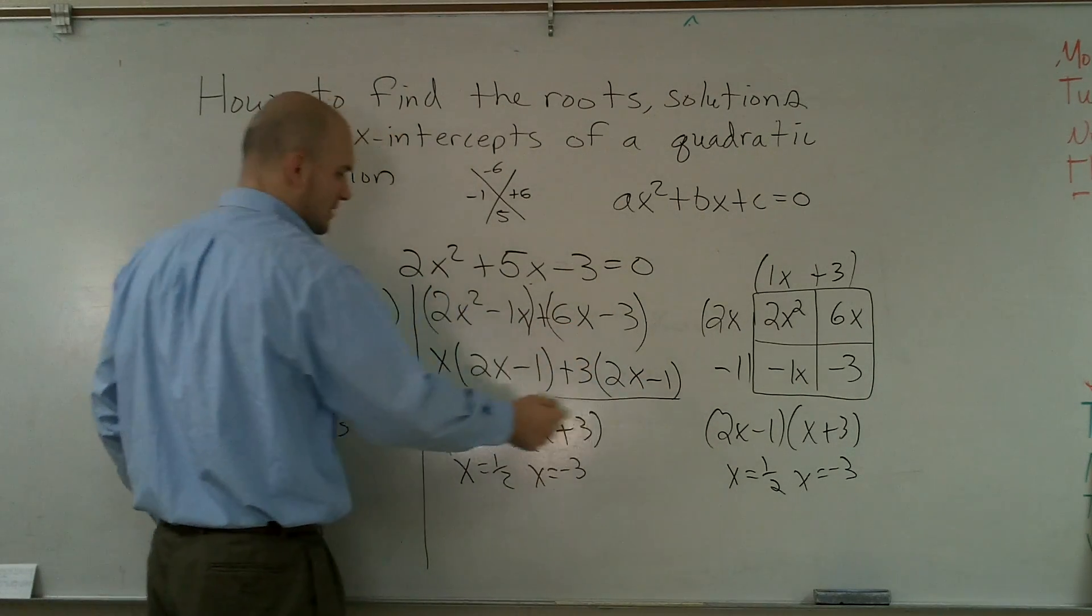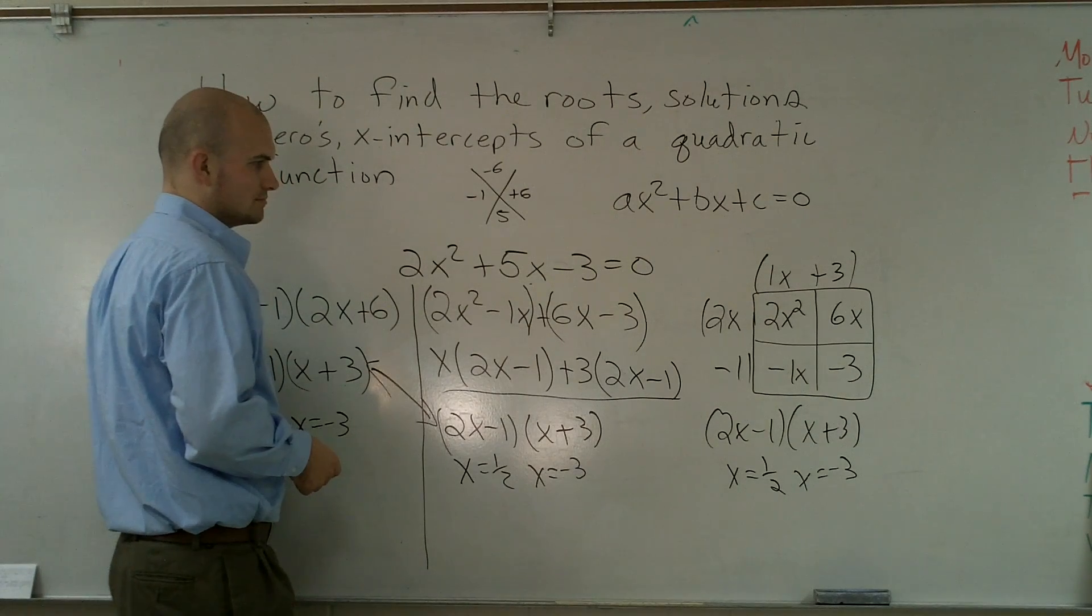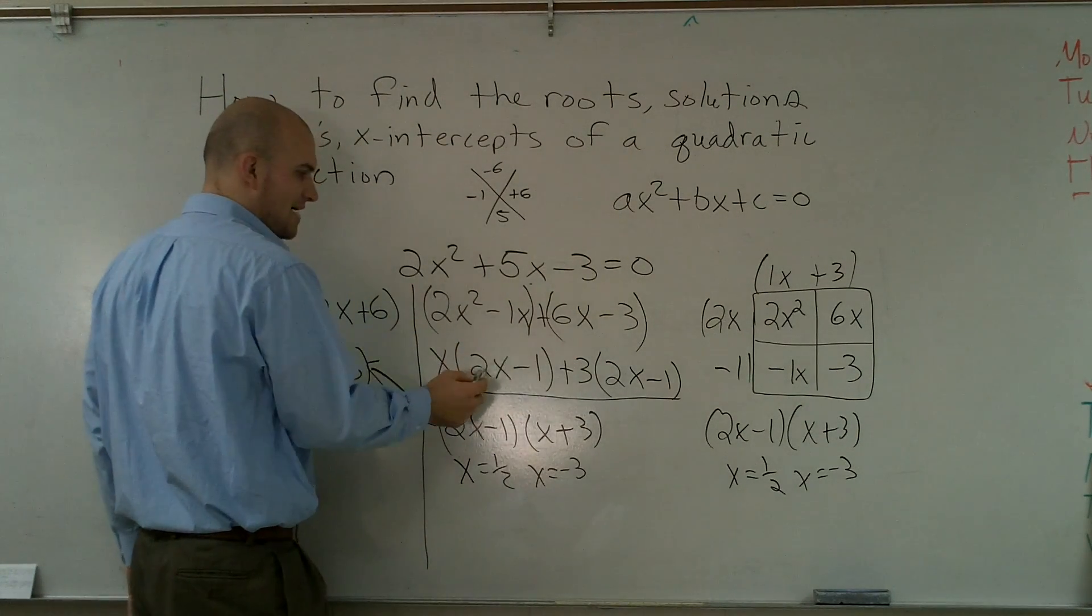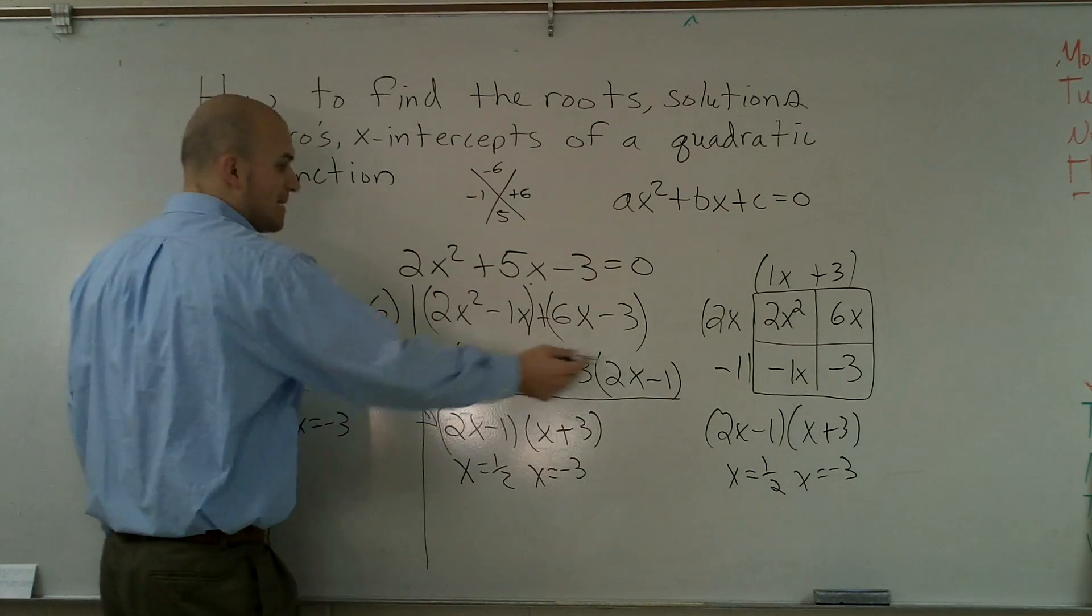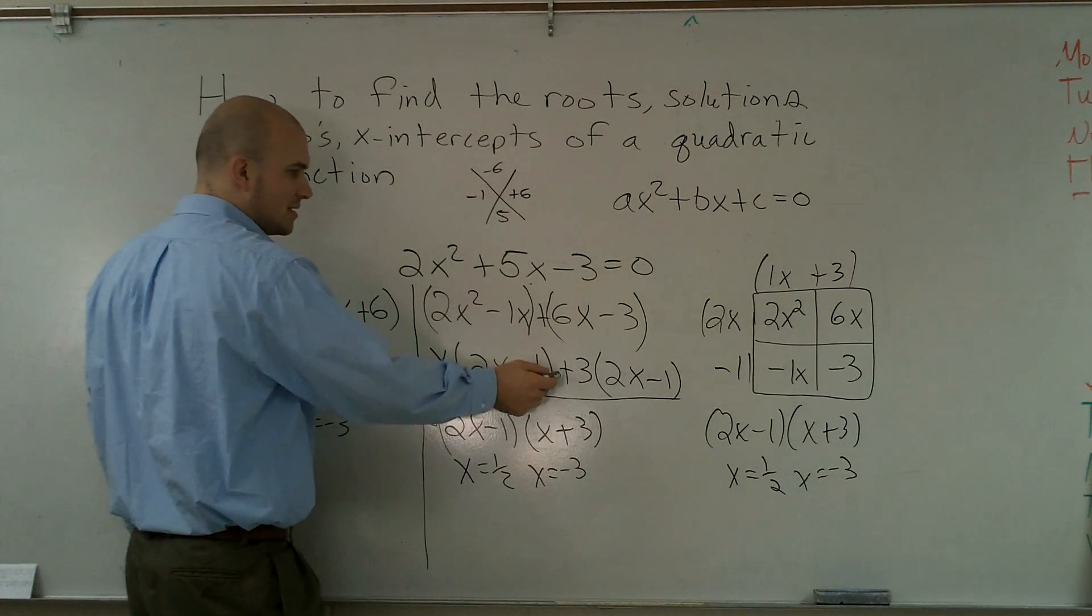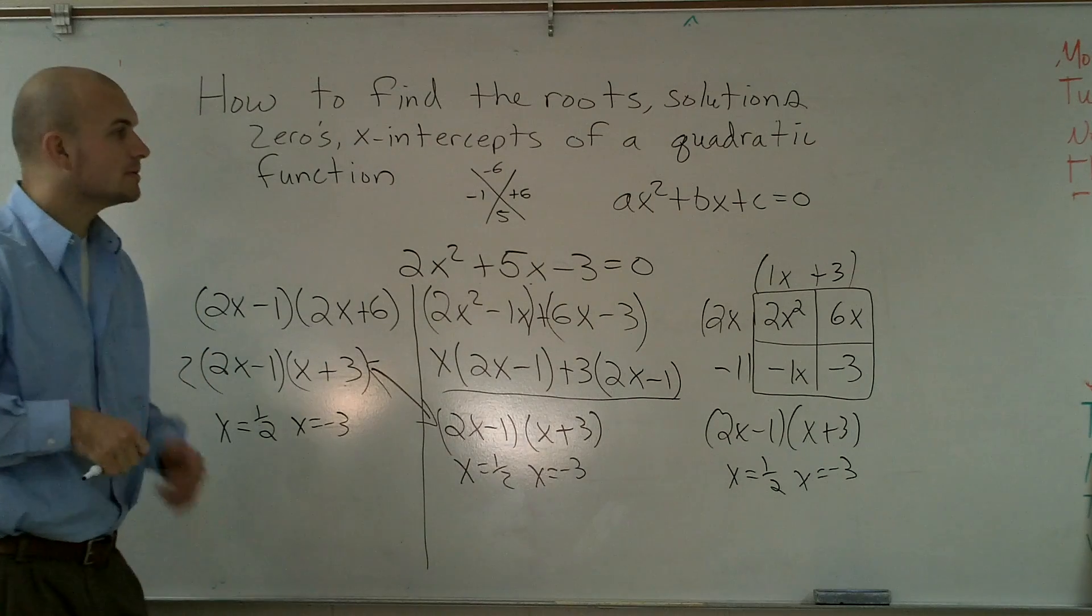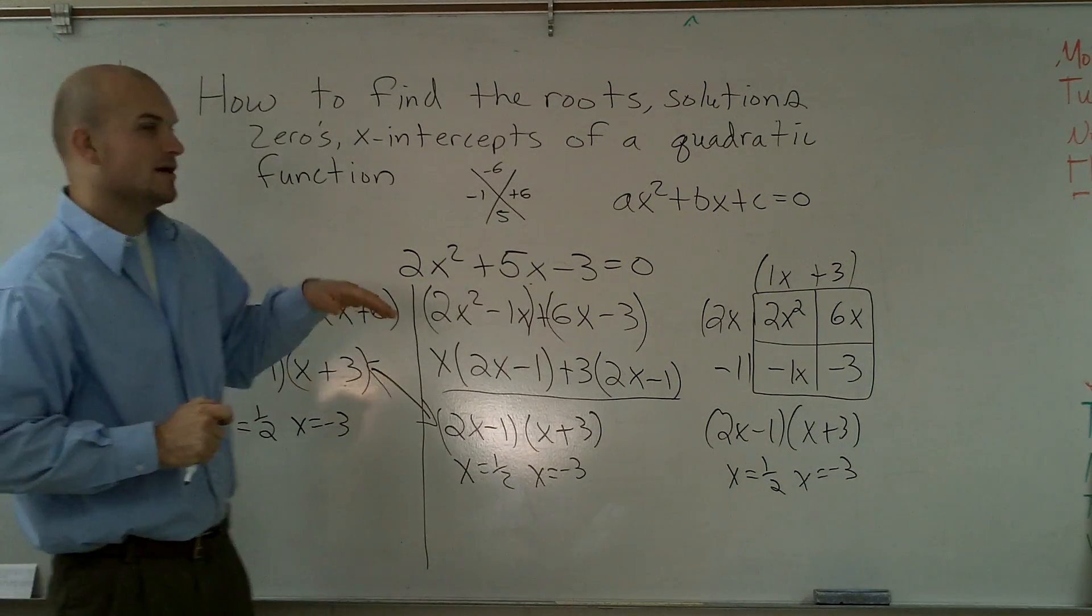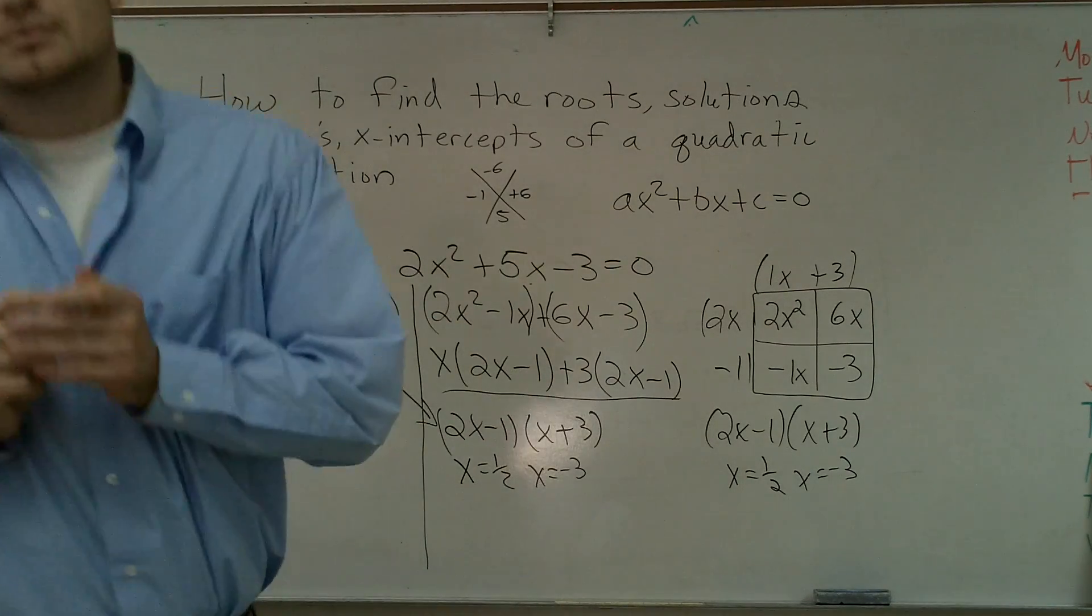That's where I got the plus 3. OK? So that's how you find the roots, solutions, zeros, x-intercepts of a quadratic function when a is greater than 2. So there's going to be a flip section.